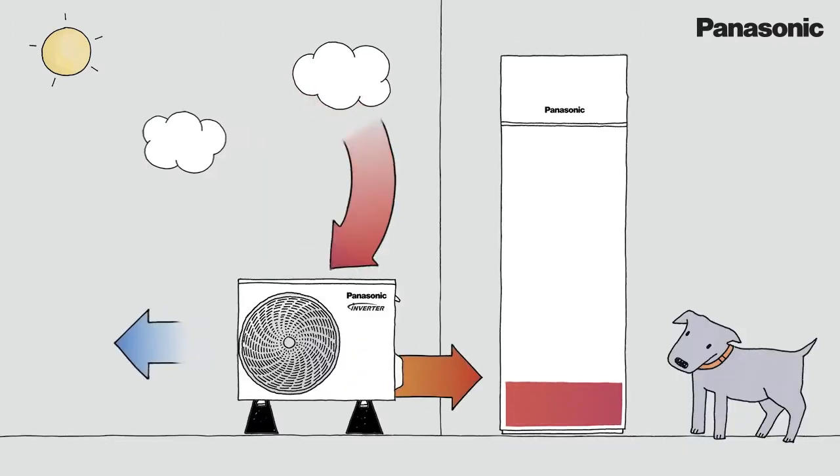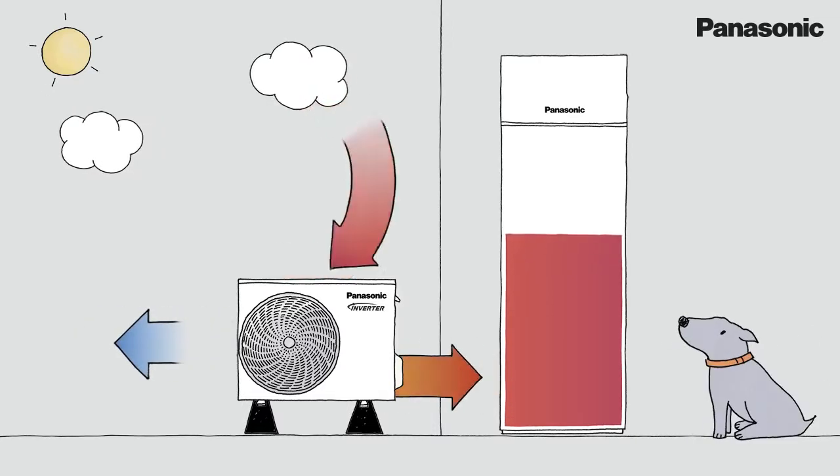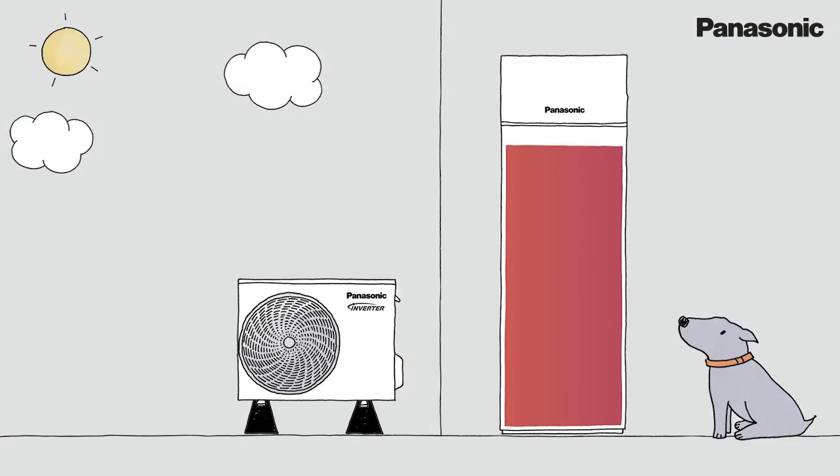Once installed, the Aquaria system uses the energy from the outside air to heat the home in winter, cool in summer and provide hot water all year round.